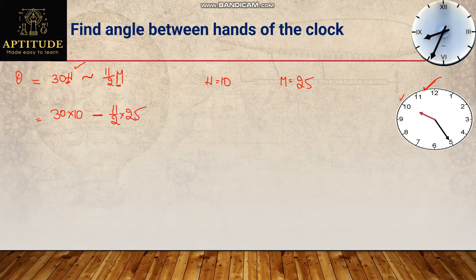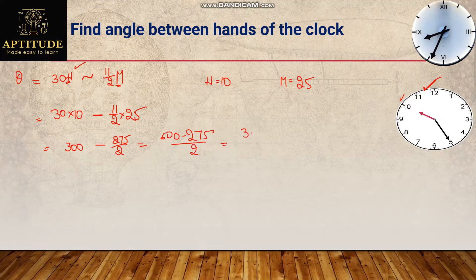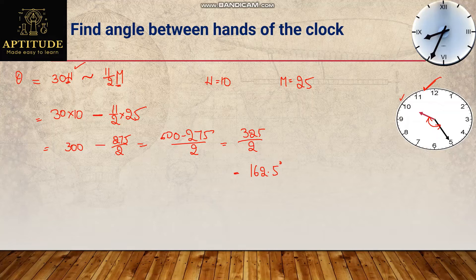Solving: 30 × 10 = 300, minus 11 × 25 = 275, divided by 2. That gives us 300 minus 275/2, which equals 600/2 minus 275/2 = 325/2 = 162.5 degrees. So the angle between the hours hand and the minutes hand is 162.5 degrees. We can also solve manually, but it's very lengthy — and exams won't use the manual process.